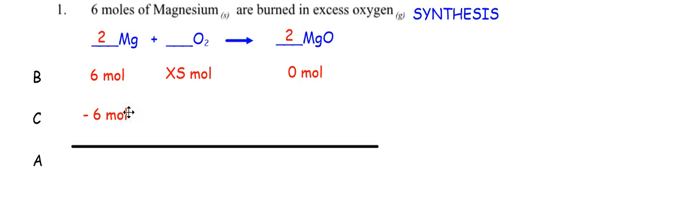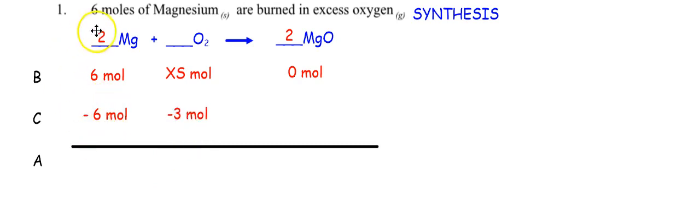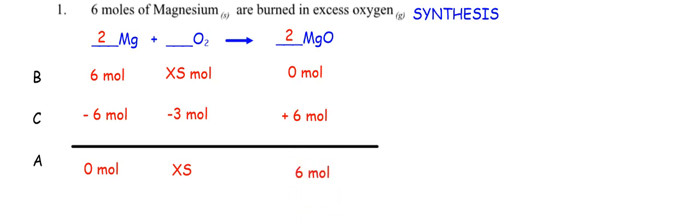Now let's finish the chart. What's six divided by two? Three. What's three times one? Three — that's the change for O₂. What's six divided by two? Three. Three times two is six — that's the change for MgO. Now simple math: six minus six is zero. A ton minus three is a ton. Zero plus six is six.